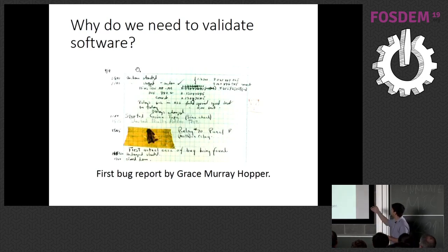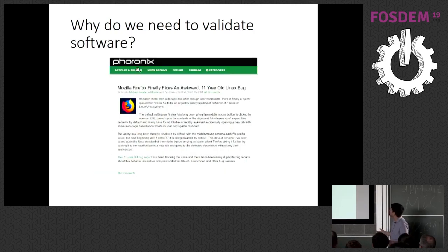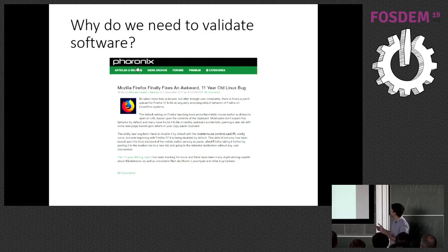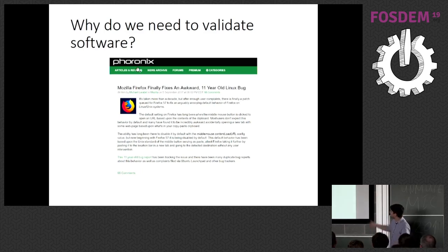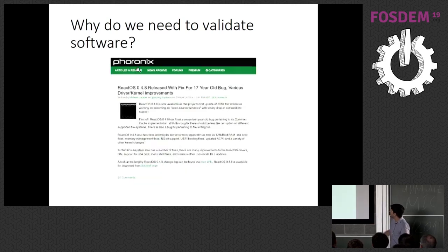This is a really nice image — it's supposed to be the first bug report ever created by Grace Hopper, the bug found in the first computer. We still have bugs today. There's an 11-year-old bug in Firefox, a 4-year-old bug in Wine, and a 17-year-old bug in ReactOS.